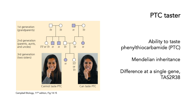Another example would be the ability to taste phenylthiocarbamide, PTC. People who can't taste this — you can put the compound PTC on a piece of tissue, they'll put it in their mouth, no response. For people who can taste it, it's a very, very horrible taste. This is an example of Mendelian inheritance, and the ability to taste PTC is due to the difference at a single gene, the TAS2R38 gene.